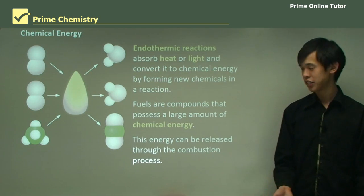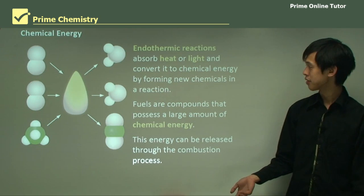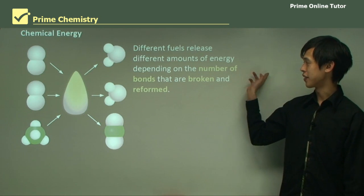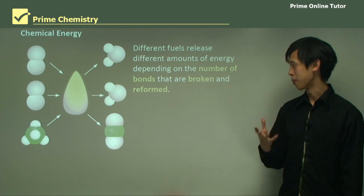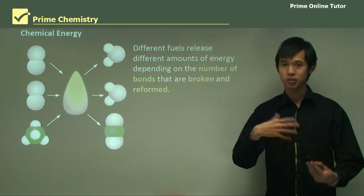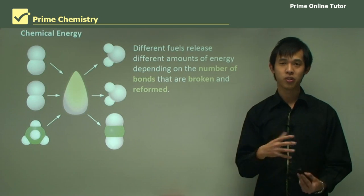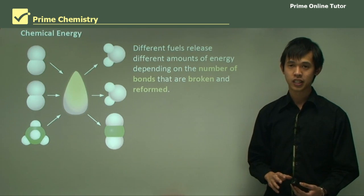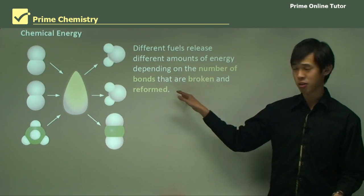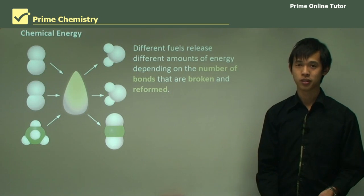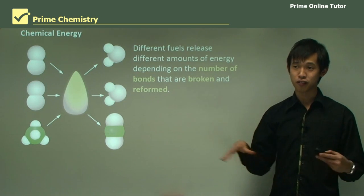So this chemical energy can be released through the combustion process. And different fuels release different amounts of energy depending on the number of bonds that are broken and reformed. So this is getting to a new topic or a new idea about chemical energy. And it has something to do with the bonds being broken and reformed. So this is where the energy flow goes.